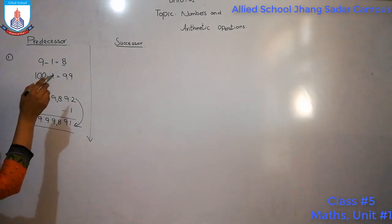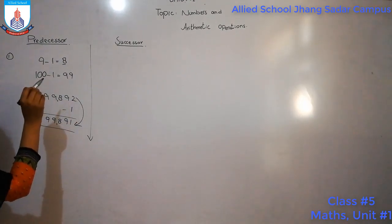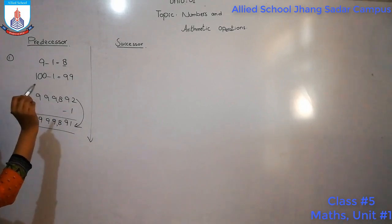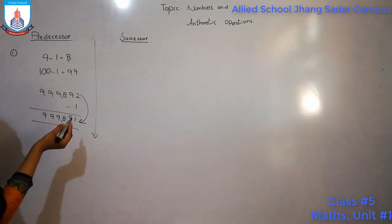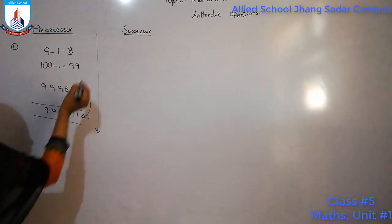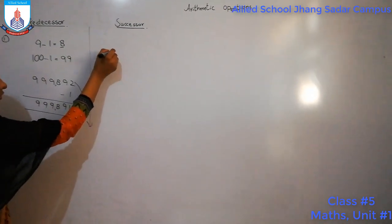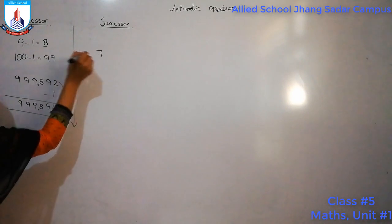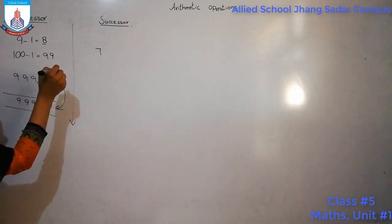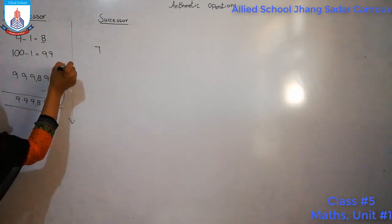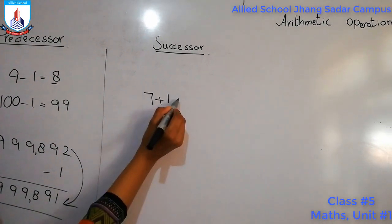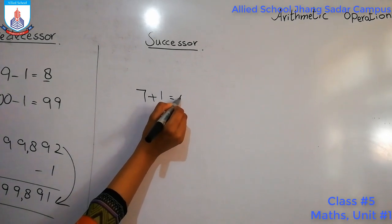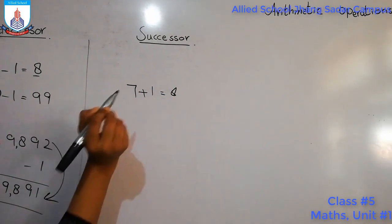Now we are going to learn about successor. Successor means we will find the next number — only one number ahead. Suppose we have 7 and we have to find its successor. Successor means we add 1. So 7 plus 1, the answer will be 8.